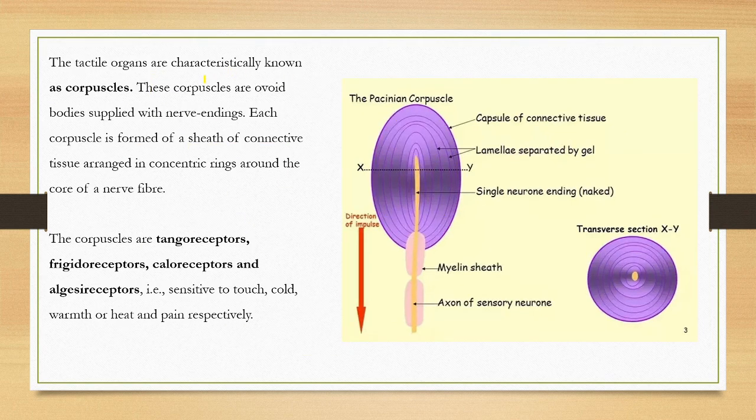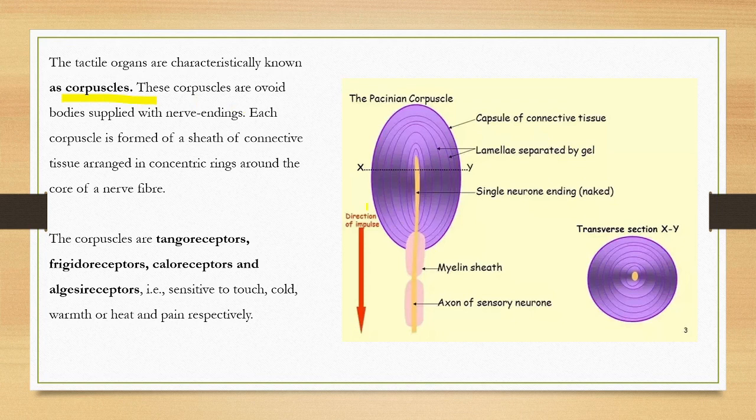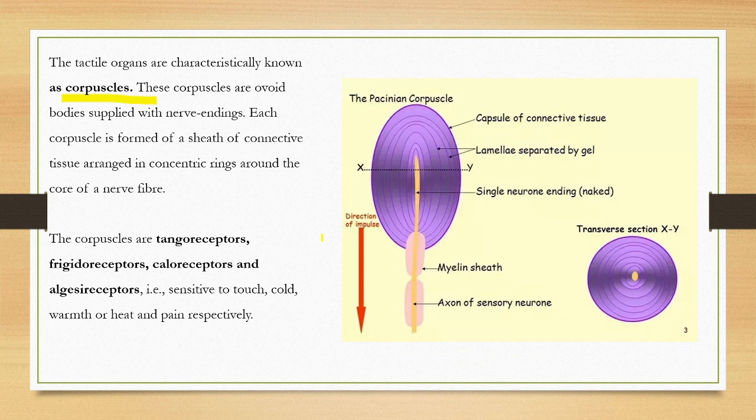Tactile organs are characteristically known as corpuscles. It is an ovoid body, oval shaped, supplied with free nerve endings. Each corpuscle is formed of a sheath of connective tissue concentrating around the nerve fiber. So this is an ovoid structure.